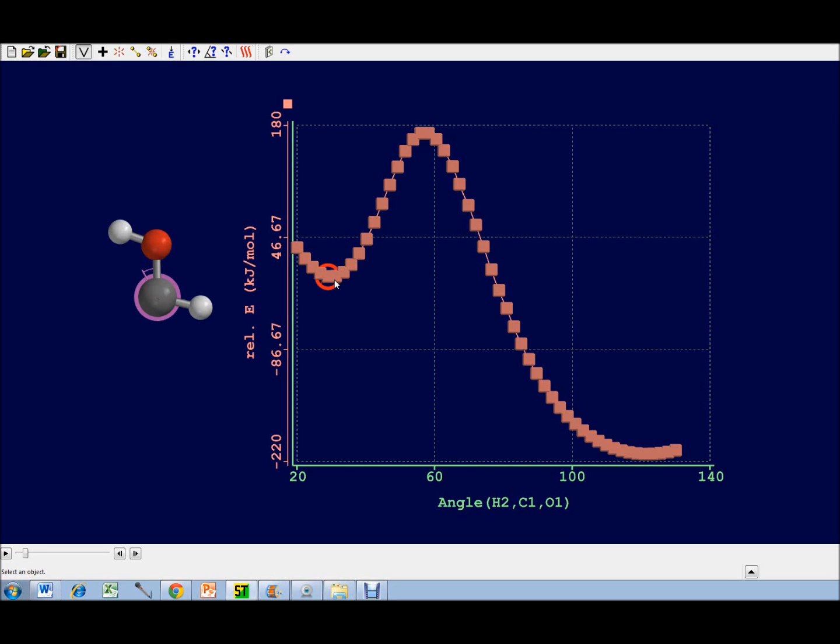as you go from the reactant hydroxymethylene to the transition state, where the hydrogen is kind of intermediate between the carbon and the oxygen, and to the product, which is formaldehyde.